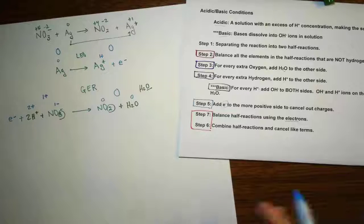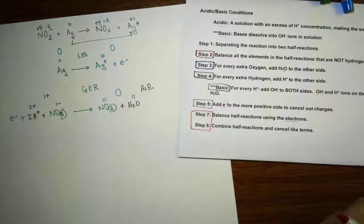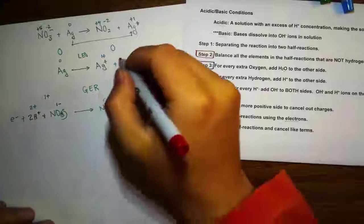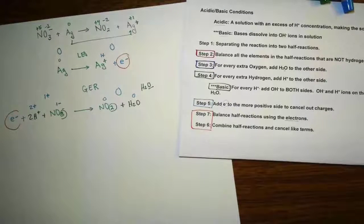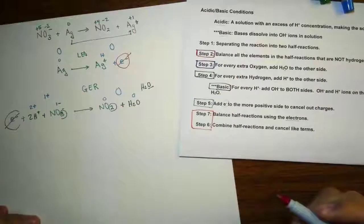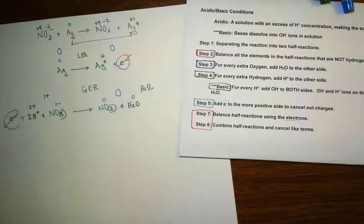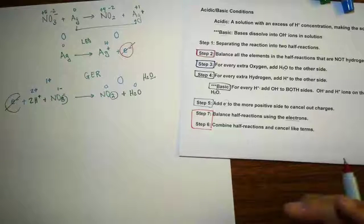So we have our half-cells completed through step 5. The last step is to combine them together. When we combine, just like in the basic redox reaction, we make sure the electrons are equal on both sides. Here we have one electron in each half-reaction, so they're already balanced. We cancel out the electrons. Can we cancel anything else? Let's check — reactants versus products.